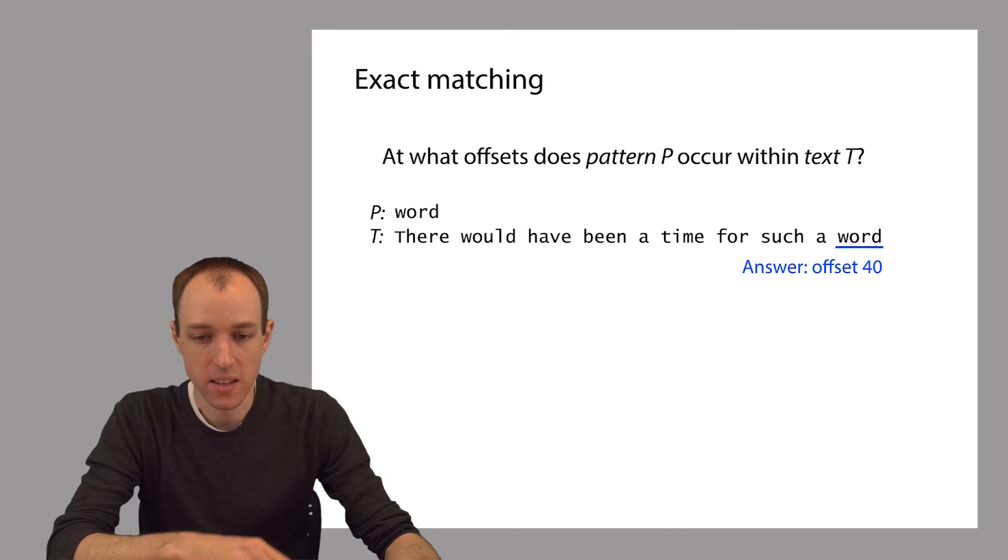The pattern P is like the needle and the text T is like the haystack that we're looking in. So in this example, we have a pattern P which is word, and we have a text T, which is 'there would have been a time for such a word'. And there's one occurrence of the pattern all the way there at the end, which is at offset 40.